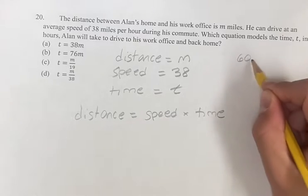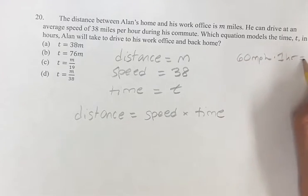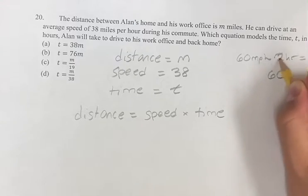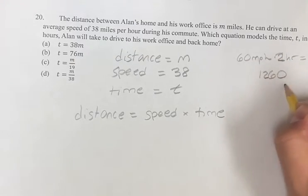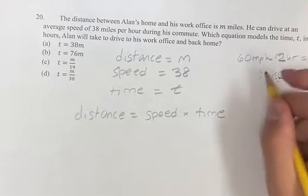If you're going 60 miles per hour times one hour, 60 times one is 60. Doing that for two hours, 120 miles.